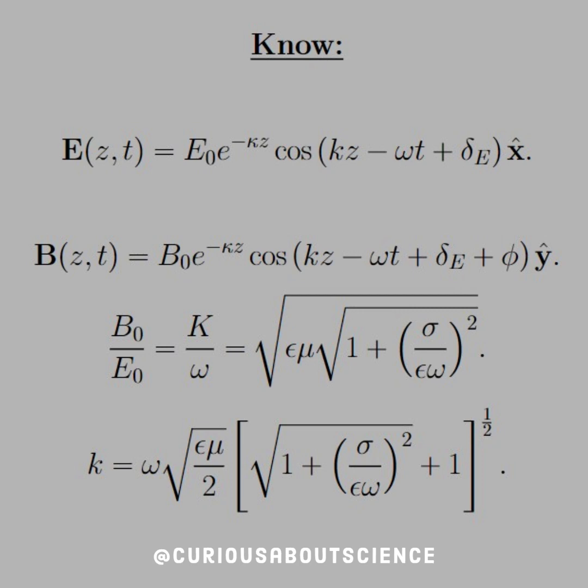Their ratio, which was found, was K over omega, a lot of things canceling, which equals the square root of epsilon mu square root of 1 plus sigma over epsilon omega squared. And K we saw before in the last couple questions was equal to this monster.